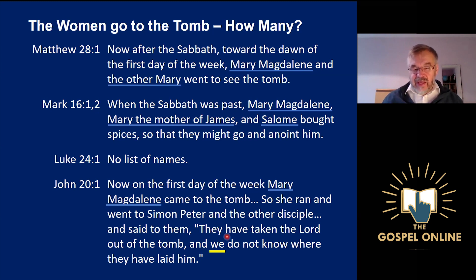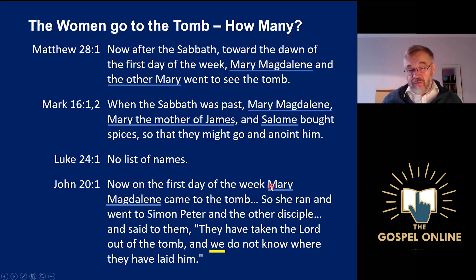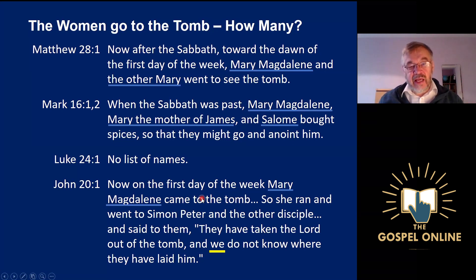If you look at what Mary Magdalene actually says, it shows that there was more than one woman. She says, 'They have taken the Lord out of the tomb and we do not know where they have laid him.' So Mary is speaking for herself and other women as well — there's more than one woman involved. Mary knew about the other people, and John knew about them too; he just didn't choose to include them in his particular account. That's one of the things you have to realize when putting resurrection accounts together: they don't necessarily list everybody who was present at every event.